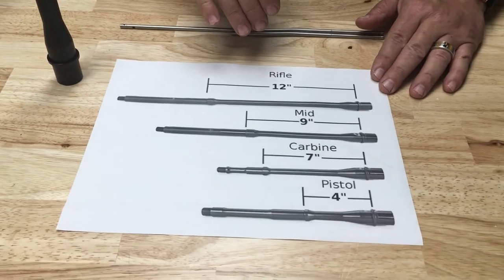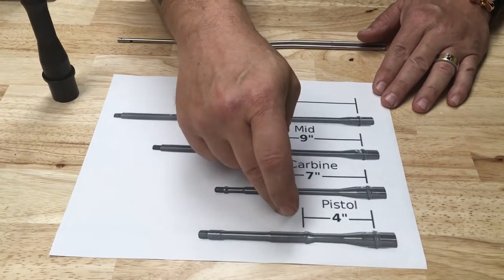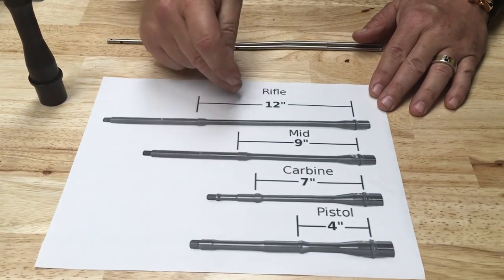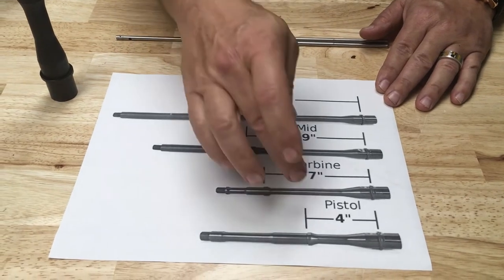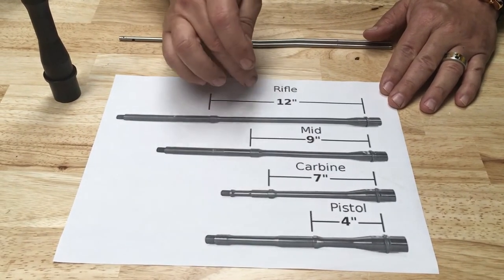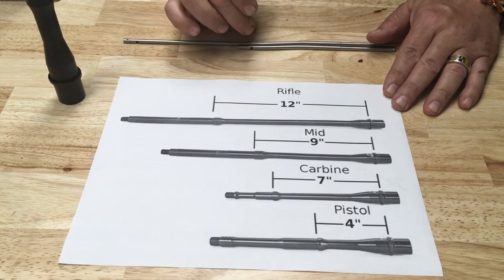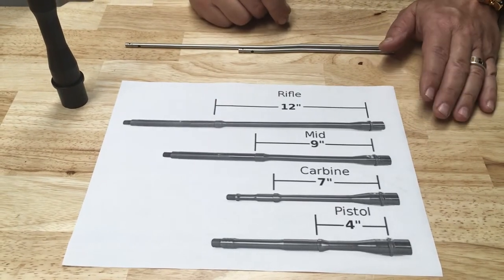You've got four different lengths in gas systems: pistol, carbine, mid, and rifle. The pistol is four inches, the carbine is seven inches, the mid is nine inches, and the rifle is twelve inches.